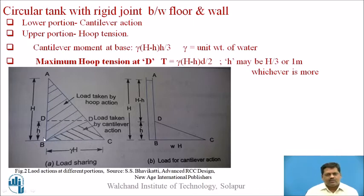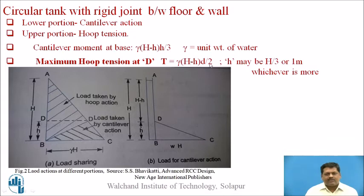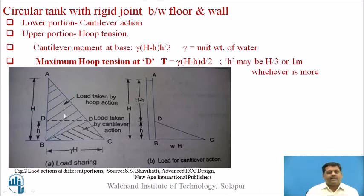The lower portion is governed by cantilever action and the upper portion by hoop tension. The cantilever moment at the base is γ·(H - H')·H'/3, where γ is the unit weight of water. The maximum hoop tension at point D is γ·(H - H')·D/2, where H' may be H/3 or 1 meter, whichever is greater — if H/3 exceeds 1 m then H' = H/3, otherwise H' = 1 m.